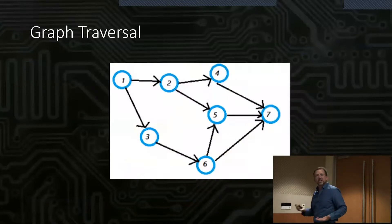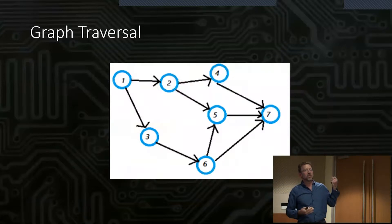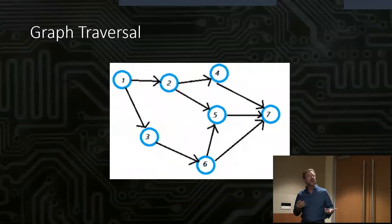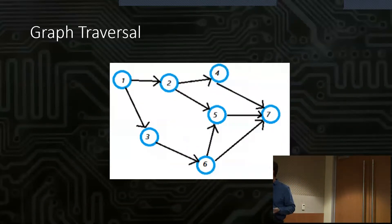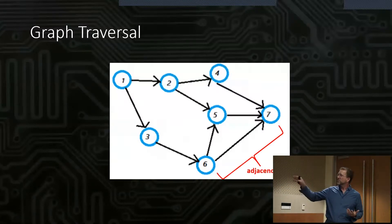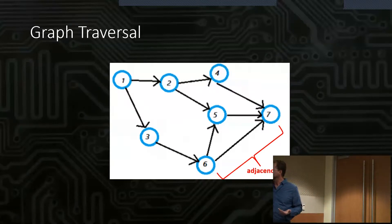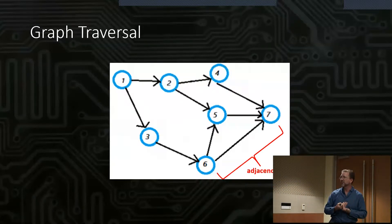What we're doing here is really graph traversal. We've got a diagram of a graph. Traversal is going from one vertex to another, from one node to another, following the edges — the connections between those nodes or vertices. The concept of adjacency: if two vertices are one hop away, we consider them to be adjacent. Adjacency means things are close to each other.